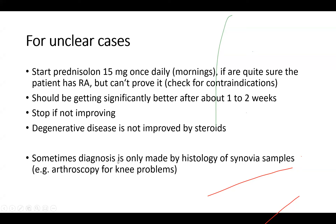Sometimes diagnosis is only made by histology of synovial samples. You do an arthroscopy for knee problems, take a sample of synovia, send it to the lab, and the lab comes back confirming rheumatoid arthritis when you didn't expect it.